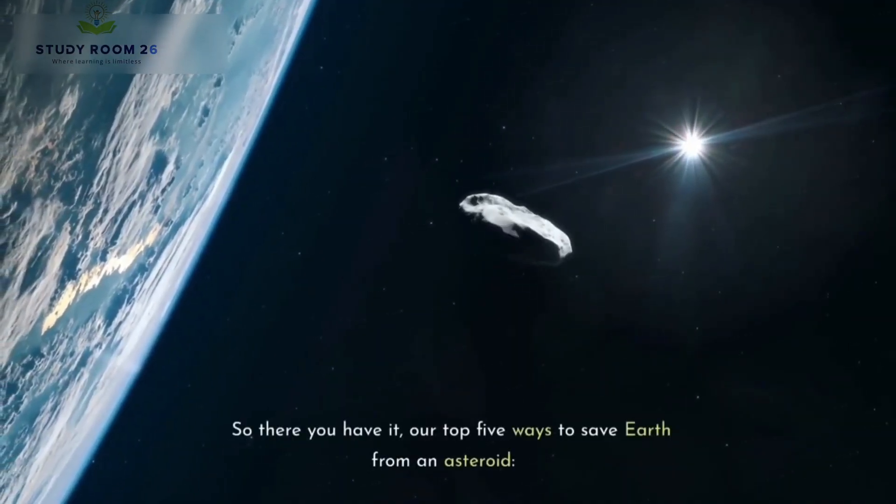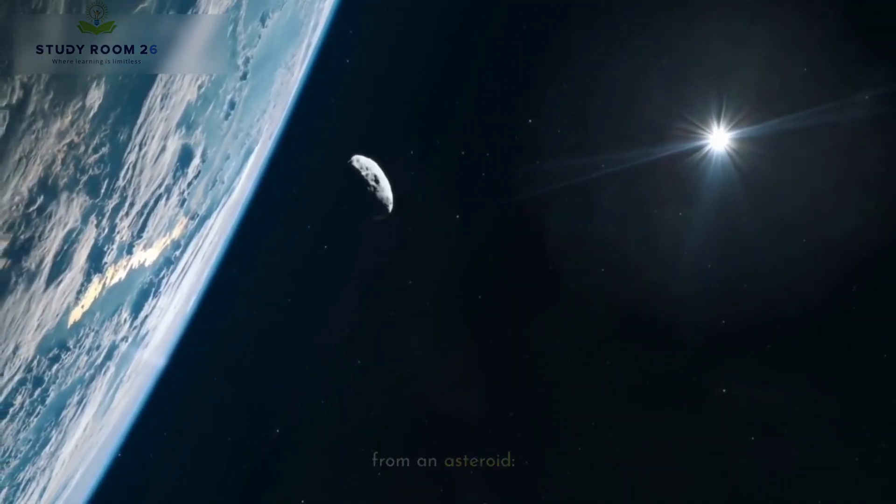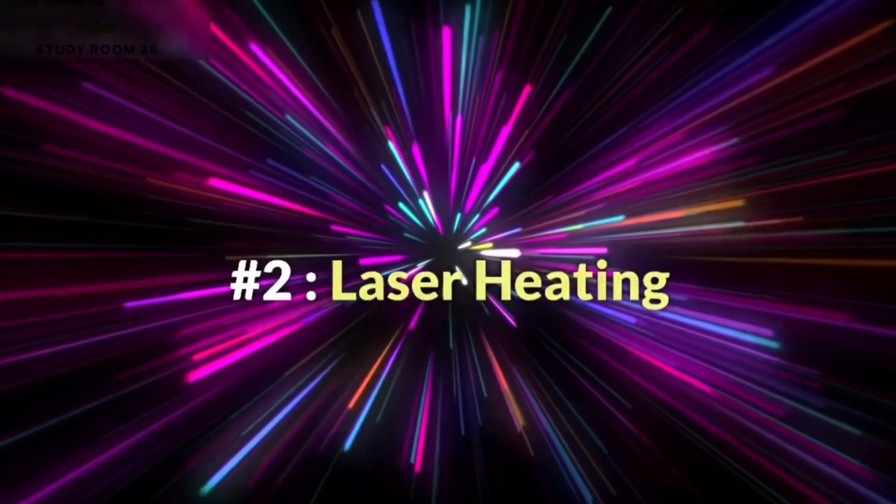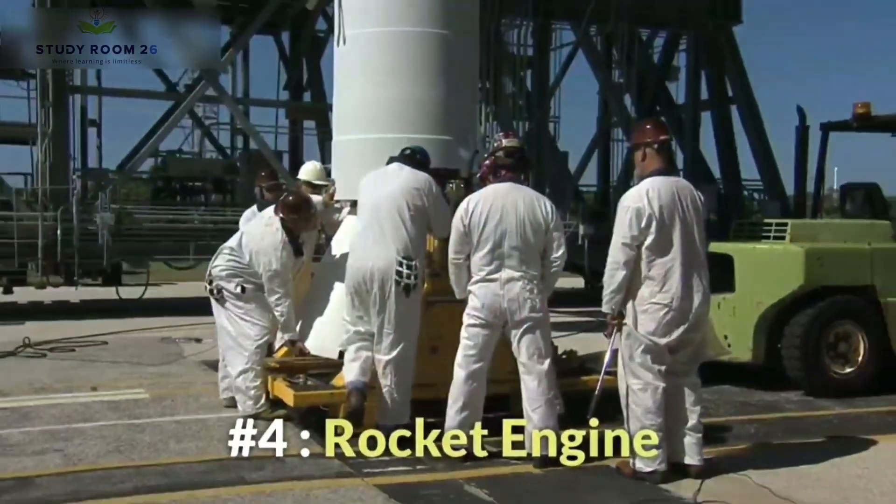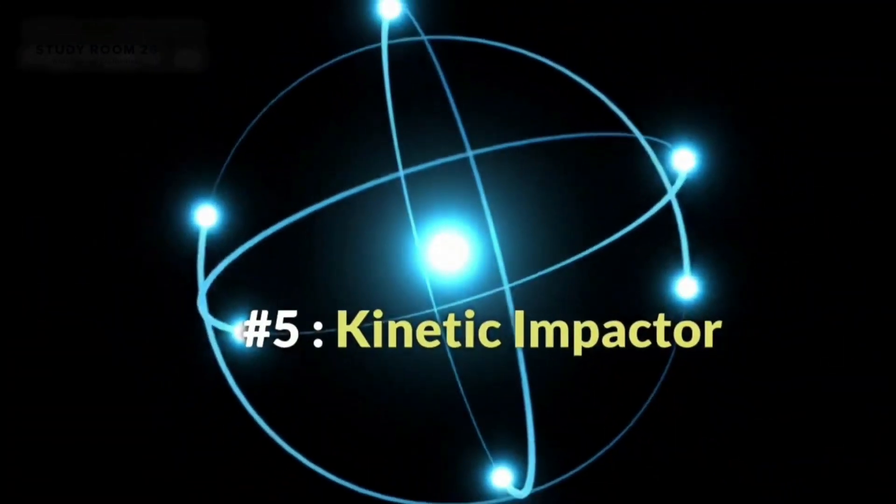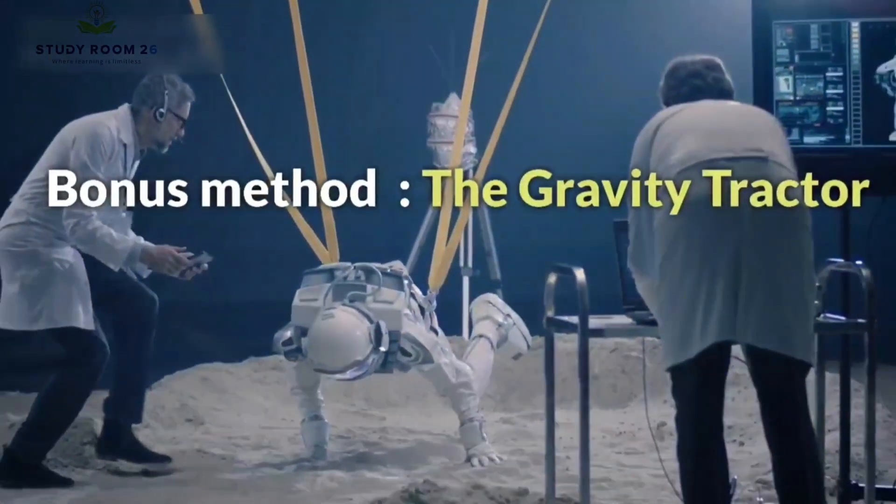So there you have it, our top five ways to save Earth from an asteroid. Nuke it, laser heating, mass driver, rocket engine, and kinetic impactor. And let's not forget the bonus method, the gravity tractor.